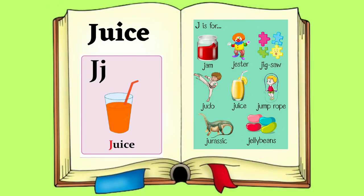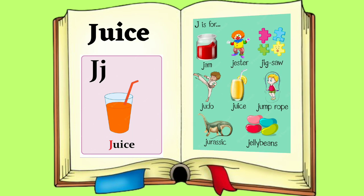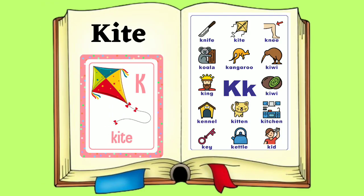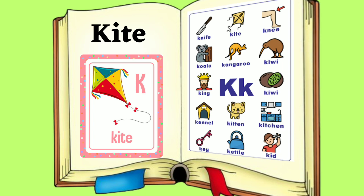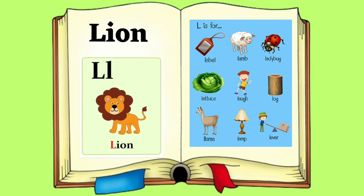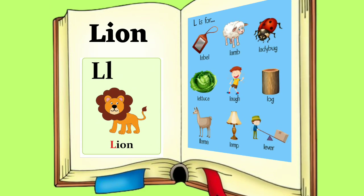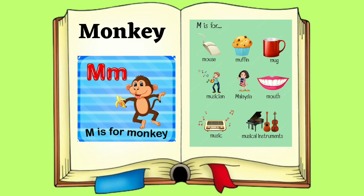Ice Cream. J for Juice. J, J. Juice. K for Kite. K, K. Kite. L for Lion. L, L.